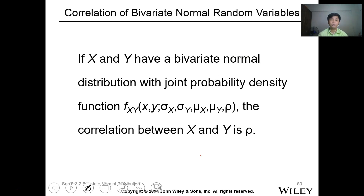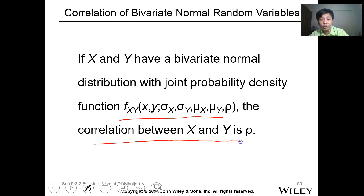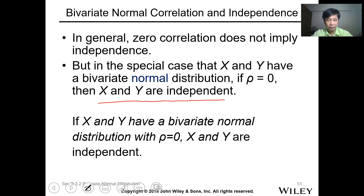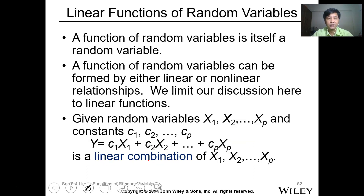For the correlation of bivariate normal random variables: if x and y have a bivariate normal distribution with joint probability density function, then the correlation between x and y is rho. In general, zero correlation does not imply independence. But in the special case where x and y have a bivariate normal distribution, if rho equals zero, then x and y are independent.